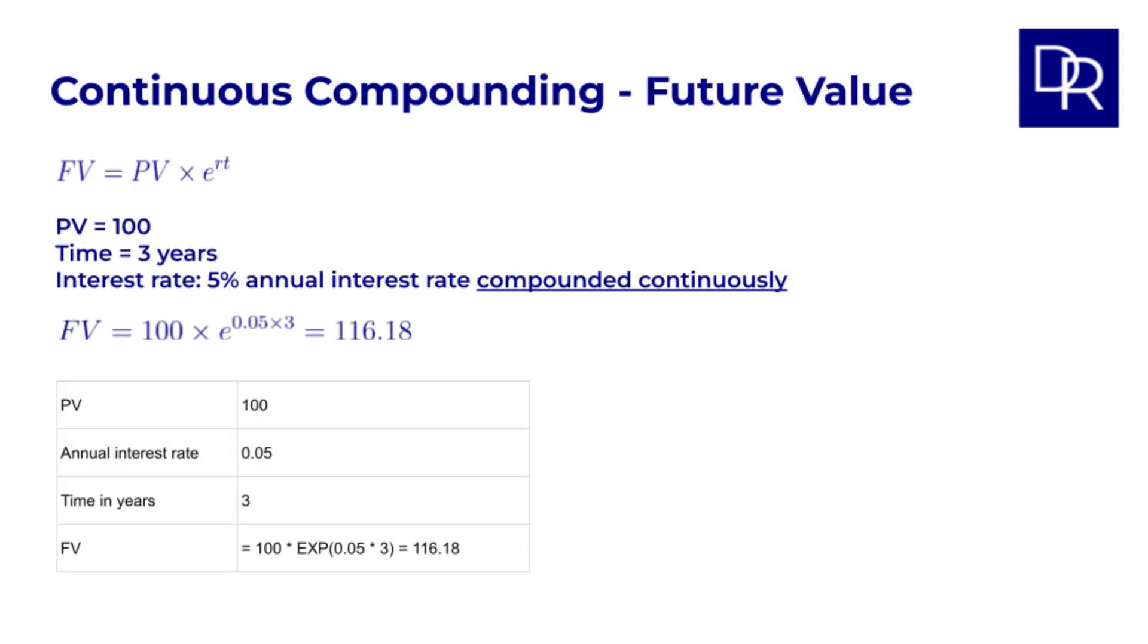To perform these continuous compounding calculations in a spreadsheet, like Google Sheets or Excel, you would use the exponential function, which is typically represented as EXP. For example, to calculate the future value with continuous compounding in Google Sheets, you would enter a formula in a cell like equals 100 times EXP in brackets 0.05 times 3 and press enter, which would give you 116.18. In the attached spreadsheet, this is in the continuous compounding tab. Finally, let's look at present value with continuous discounting.